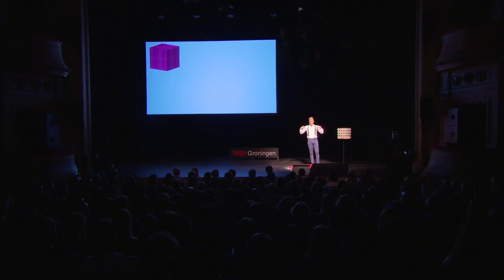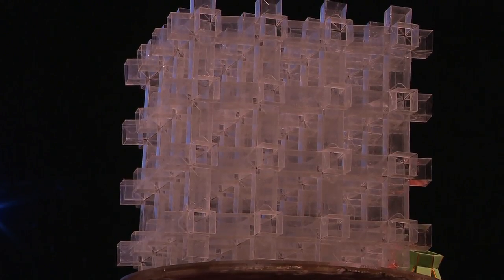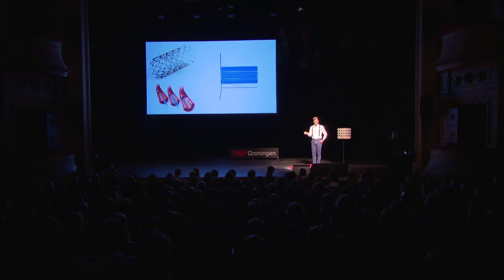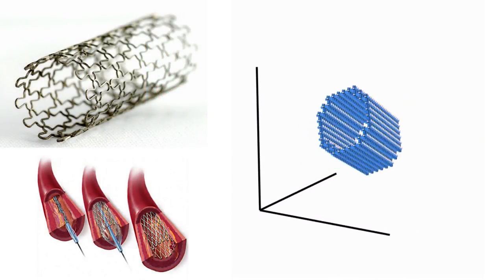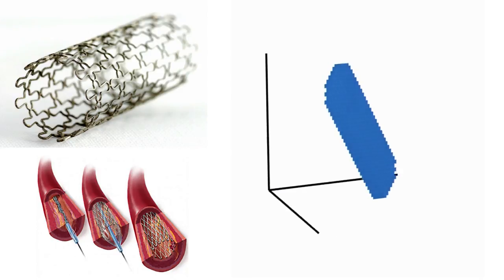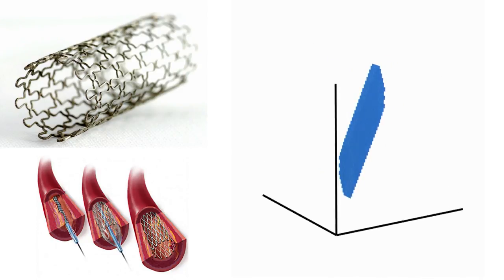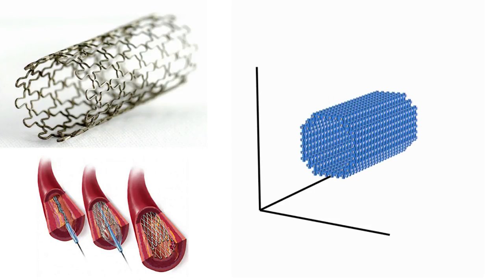And so, maybe you already get some ideas about possible applications where we can apply these materials. And I also have a few ideas. For example, if we take this material and shape it into a tube, this tube can fold completely flat. And so, we could maybe use this as a stent, which is already a medical device that can actually be brought into our arteries.